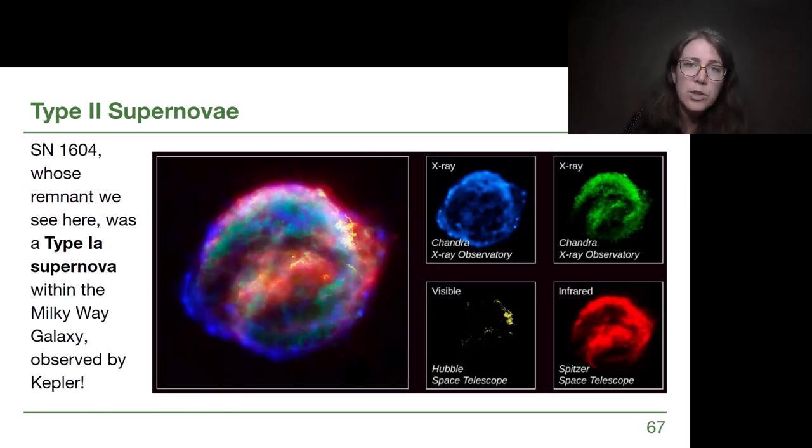Supernova 1604, the last time that a supernova event was observable to the human eye, was way back in 1604. Between then and now, it has faded so that it does not create very much visible light. The visible light is color-coded yellow here in this series of images. But we can still track what's going on here.